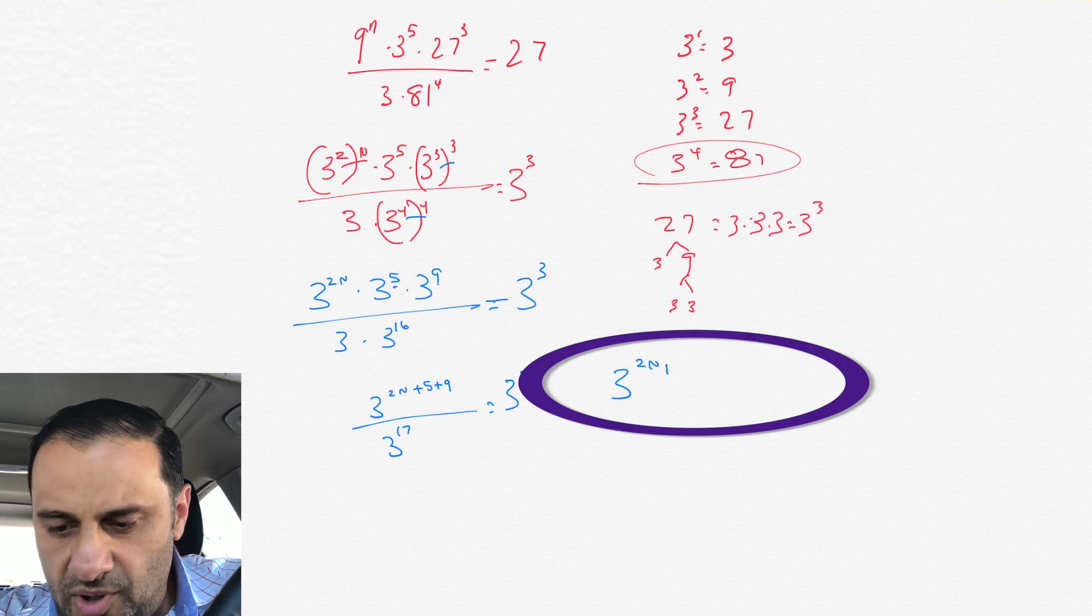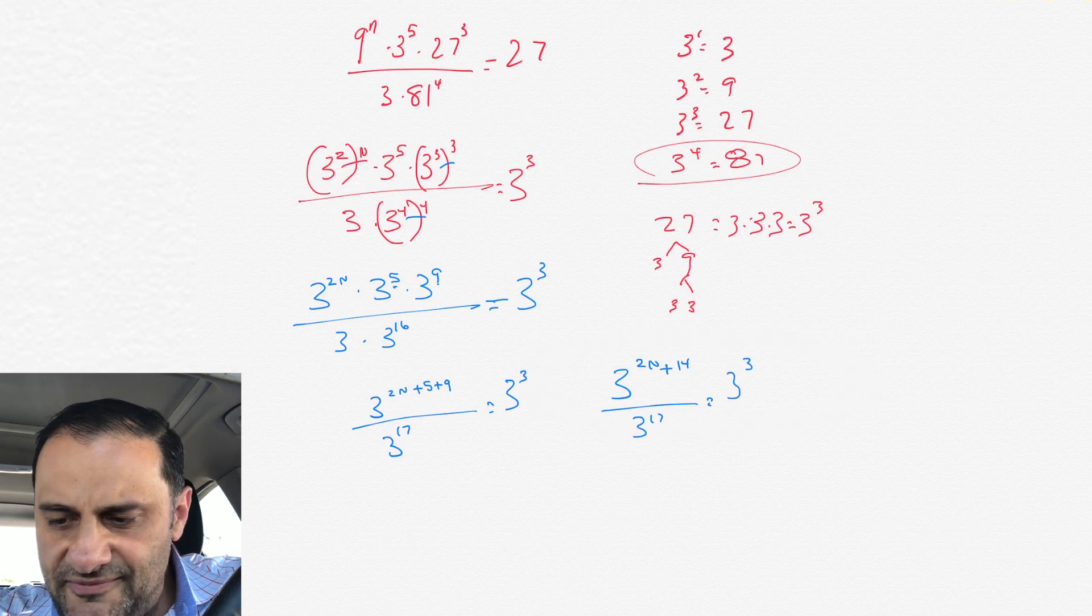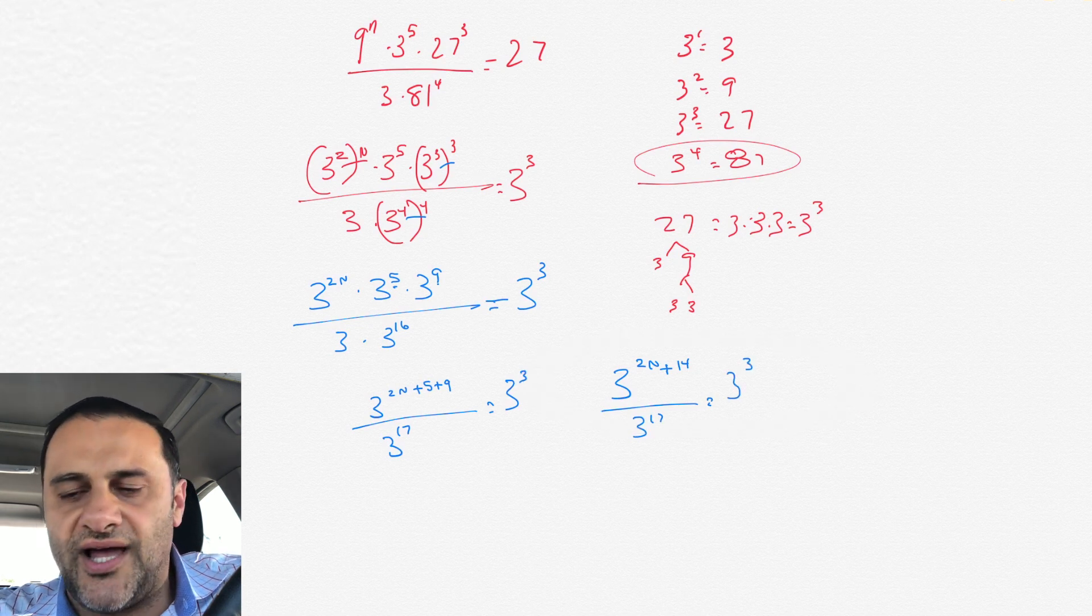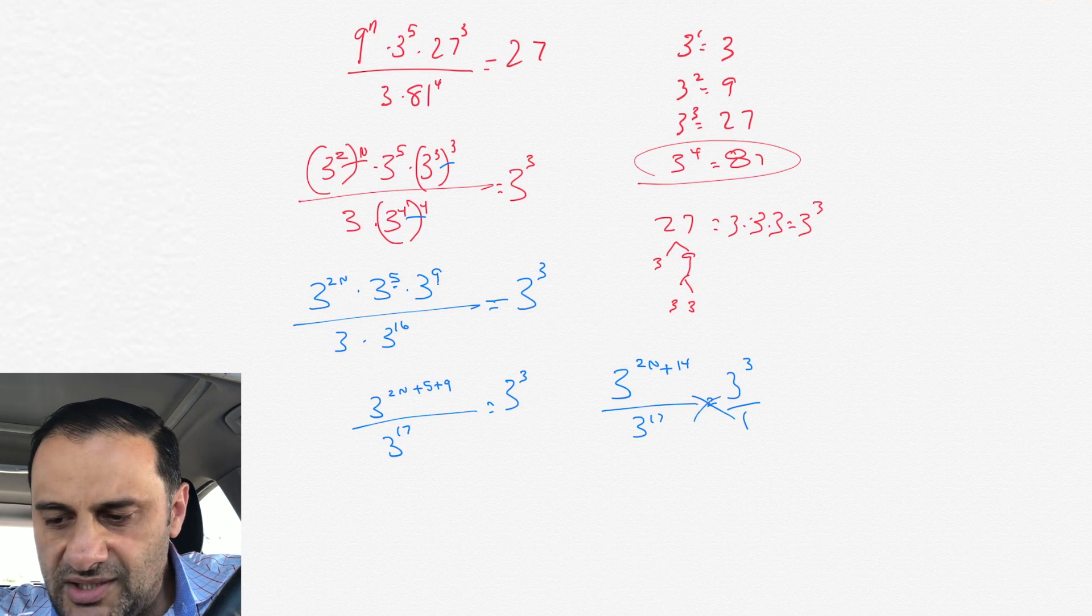What I would probably do at this point is I would cross multiply it. On the numerator side, we have 2n, and then we had plus 5 plus 9. 5 plus 9 is like 14, so we have 3 to the 2n plus 14 over 3 to the 17 equals 3 to the 3, and if we cross multiply it, there's a 1 down there.